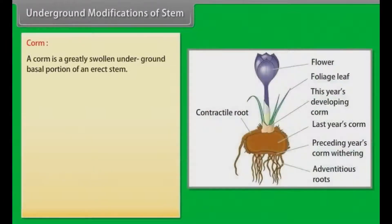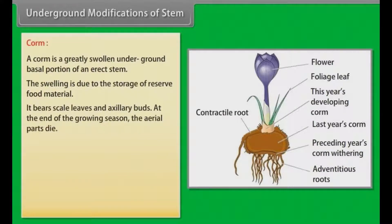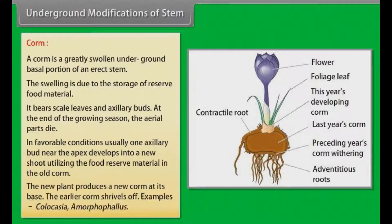A corm is a greatly swollen underground basal portion of an erect stem. The swelling is due to the storage of reserve food material. It bears scale leaves and axillary buds. At the end of the growing season, the aerial parts die. In favorable conditions, usually one axillary bud near the apex develops into a new shoot utilizing the food reserve material in the old corm. The new plant produces a new corm at its base, and the earlier corm shrivels off. Examples: Colocasia, Amorphophallus.